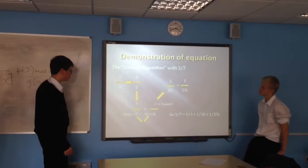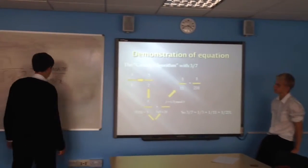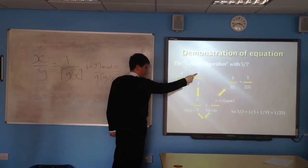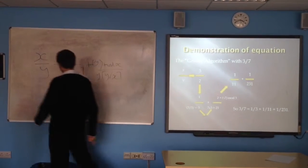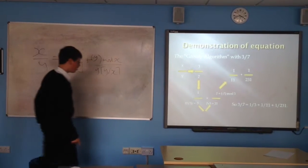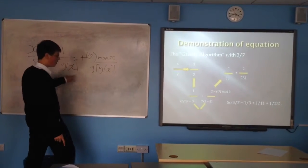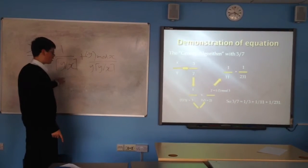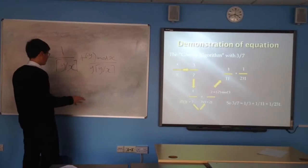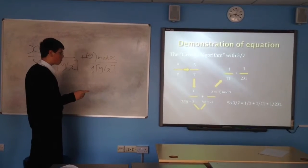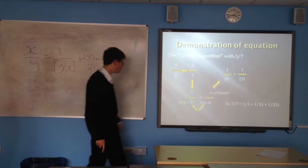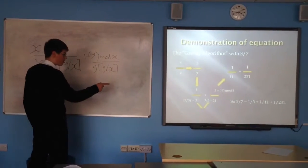Here's a demonstration of the greedy algorithm, finding the Egyptian fraction representation of 3/7. So x is 3 and y is 7. We have 1 over the ceiling of y/x, which is 7/3. Since 7 divided by 3 is more than 2 but less than 3, the ceiling is 3, giving us 1/3.